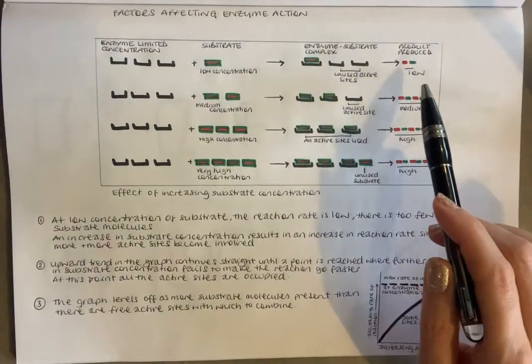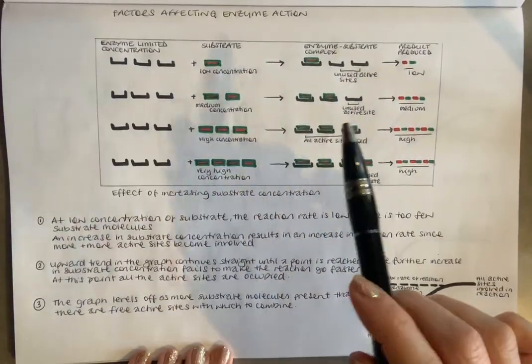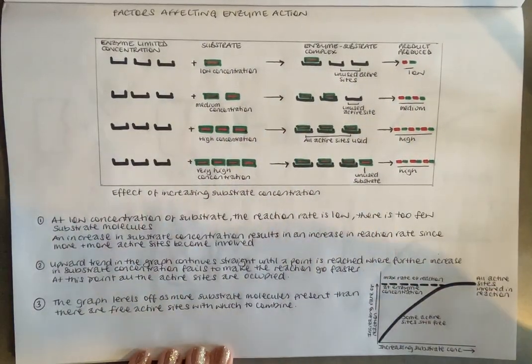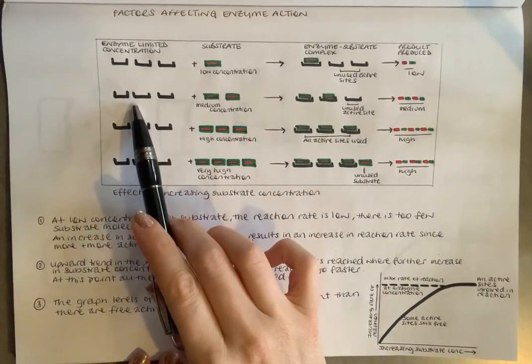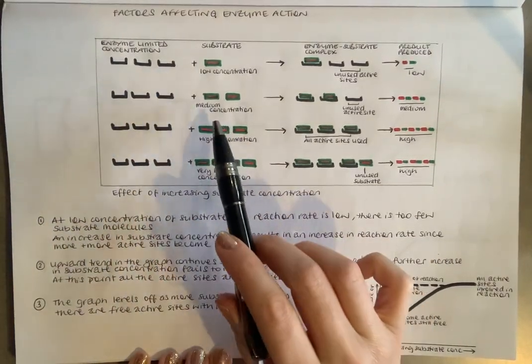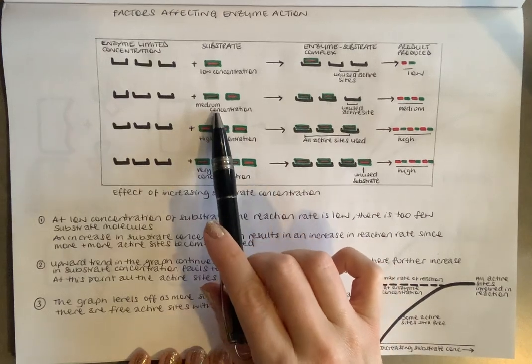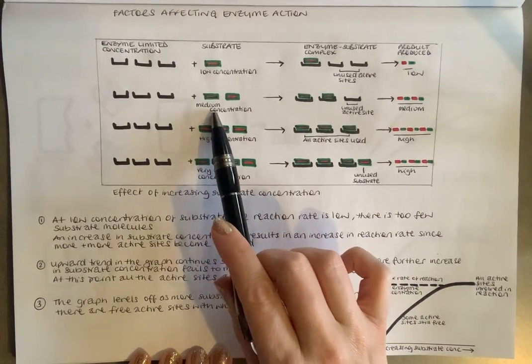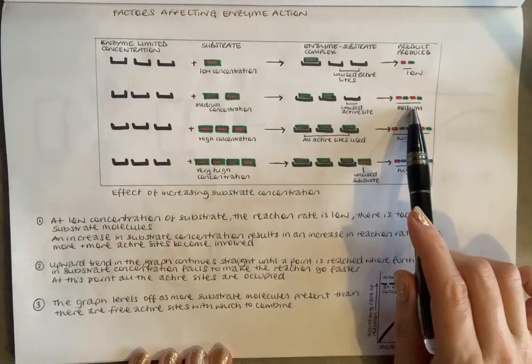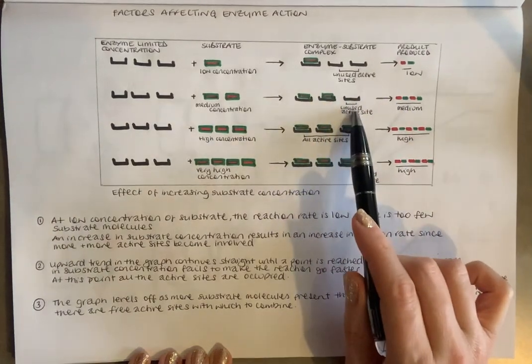Obviously the product that we produce, there's going to be a low concentration of it because we need to have this balance of numbers of substrate compared to enzyme. With a medium concentration of substrate, we still get products but we've still got unused active sites.